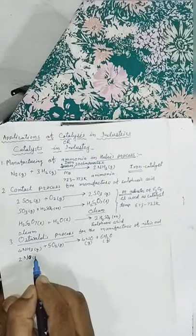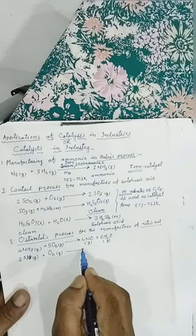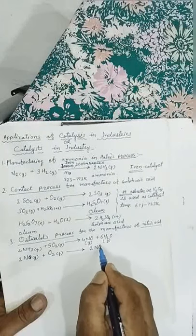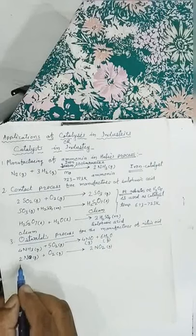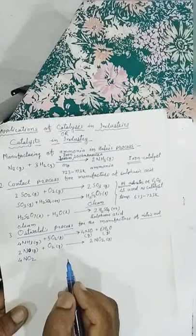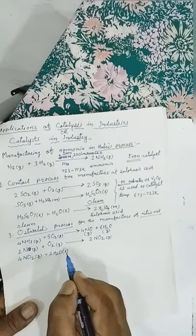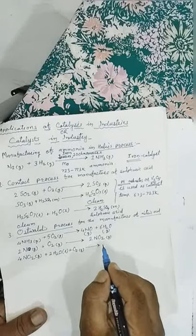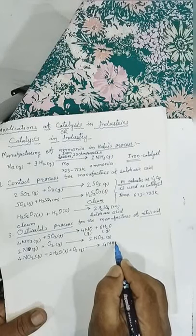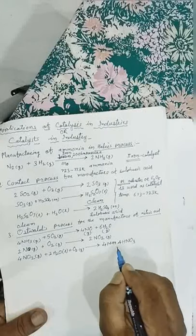In the next step, 2NO gas is further oxidized with oxygen, giving 2NO₂. Then 4NO₂ gas plus 3H₂O liquid plus O₂ gas gives 4HNO₃, that is nitric acid.